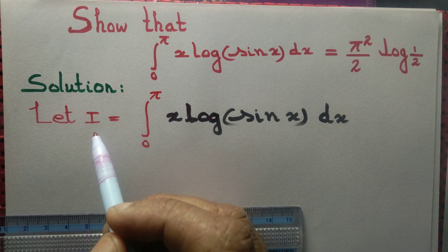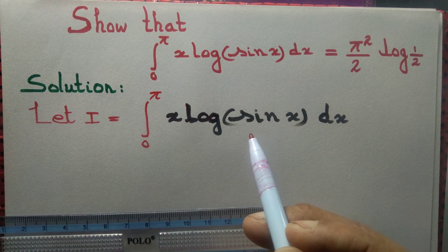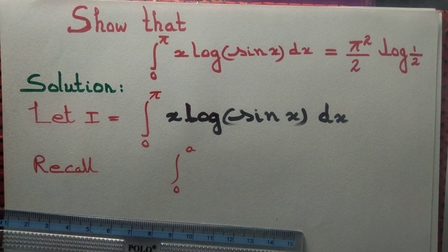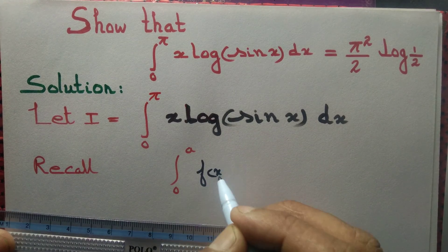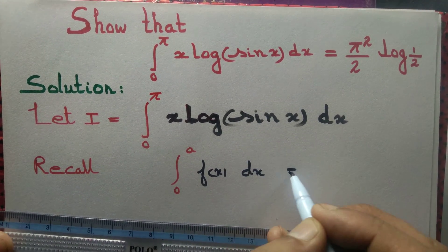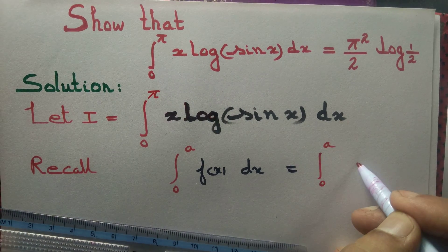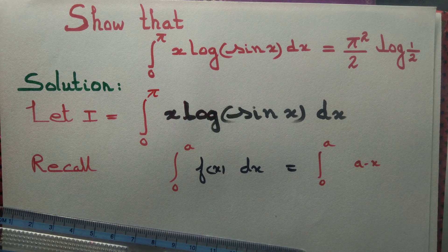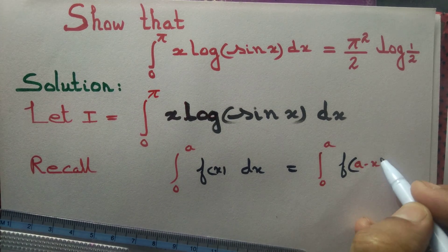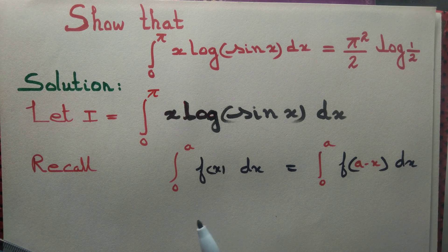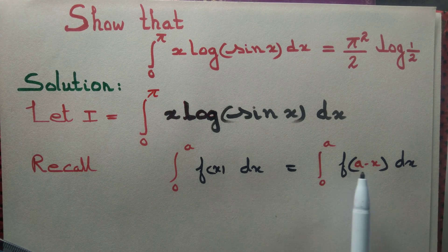We start by taking I equal to the integral from 0 to π of x·log(sin x)dx. We recall the formula: the integral of f(x)dx from 0 to a equals the integral from 0 to a of f(a - x)dx. That is, if you are computing the integral from 0 to a of f(x)dx, then replacing x by a minus x, the integral remains unchanged.